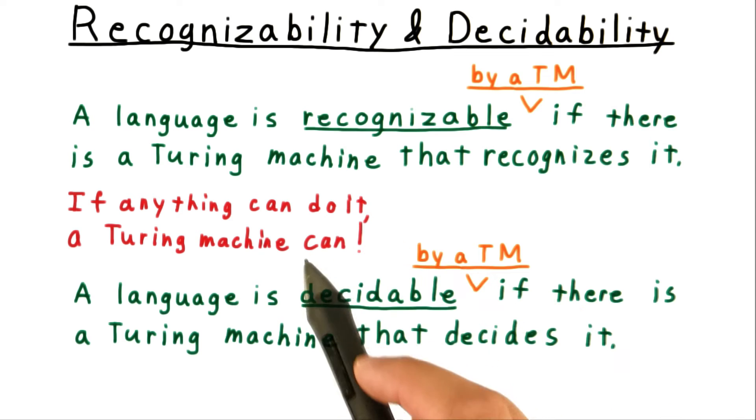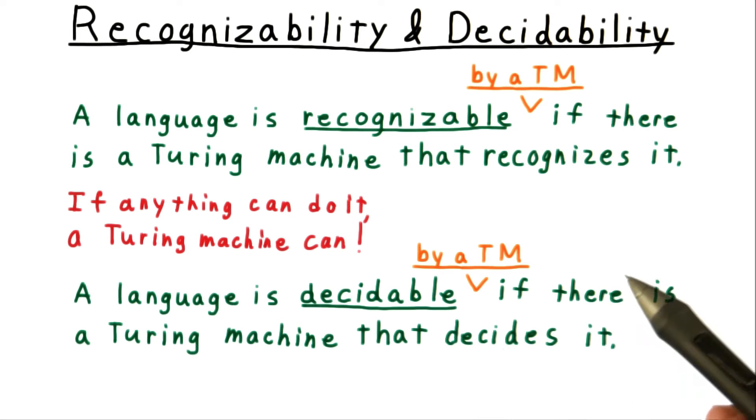The reason we don't is that we strongly believe that if anything can do it, a Turing machine can. That's the Church-Turing thesis.